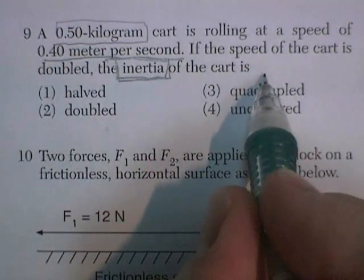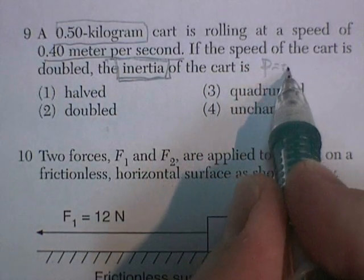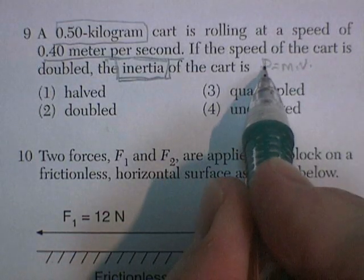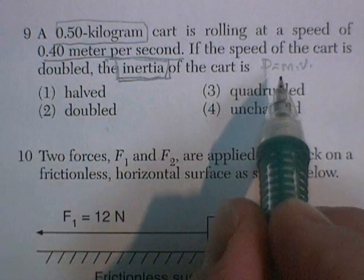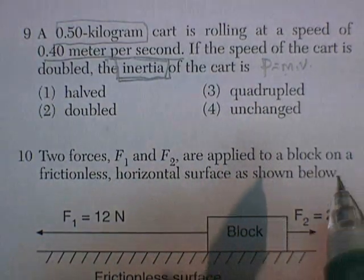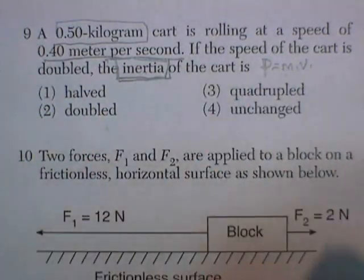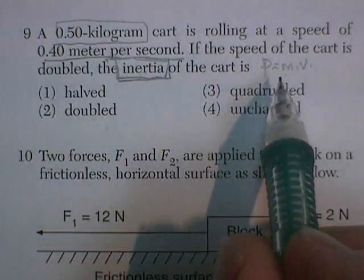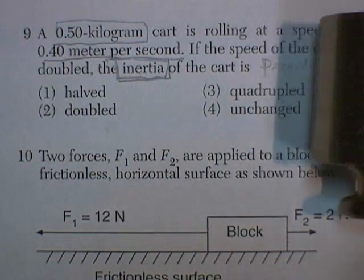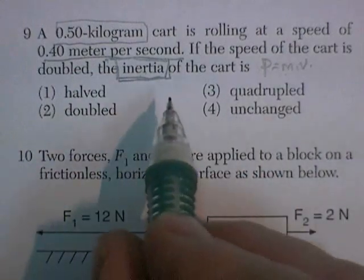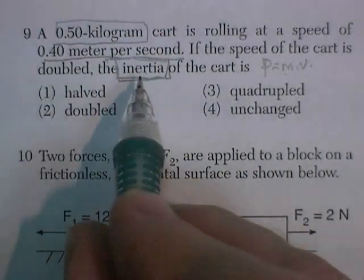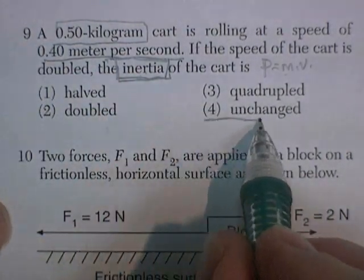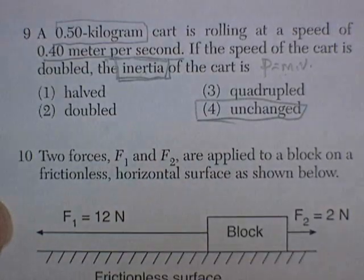You're going to think of momentum as mass times velocity. I double the velocity, I double the momentum. However, inertia deals with the mass of the cart. In order to change the inertia, you have to change the mass. So if the cart's mass stays the same, its inertia stays the same. If we were to double the mass, we could double the momentum. But this question deals with inertia. So we select unchanged as our answer.